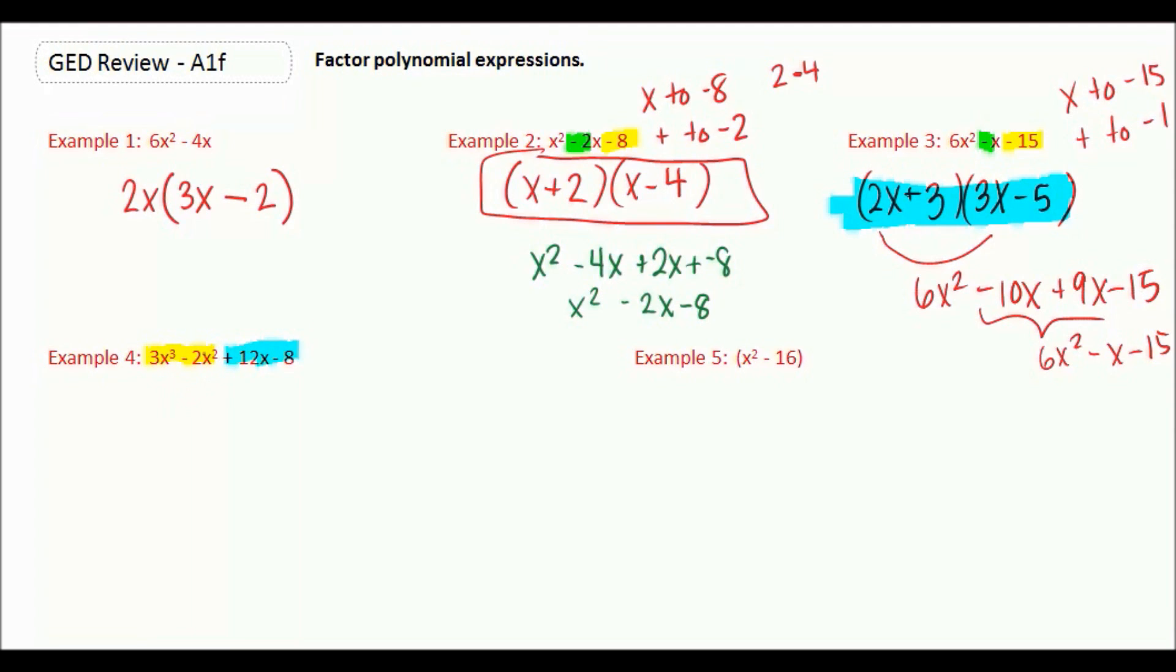Looking at 3x cubed minus 2x squared, I can actually pull out an x squared. That would mean that I'd have an extra 3 and an extra x. And then over here I'd have an extra 2. Well now looking at my blue set. I have 12x minus 8. I could pull out a 4. Which means I'd have 3x left. And I'd have a 2. And now from each of those sets we actually pulled out the same binomial. So what we're allowed to do is we can say, well one of our pairs of factored terms is 3x minus 2. And then we're going to combine our extra stuff together. So we're going to multiply that by x squared plus 4.